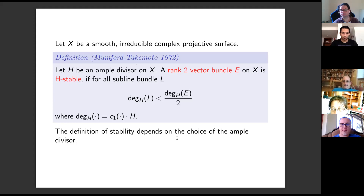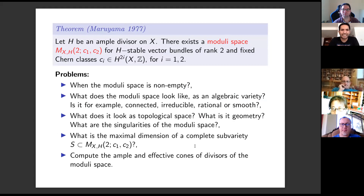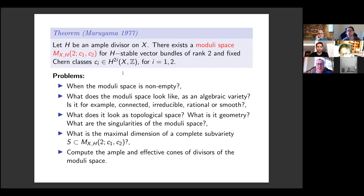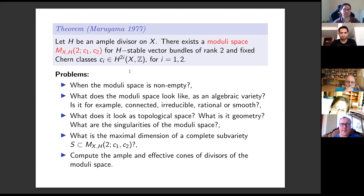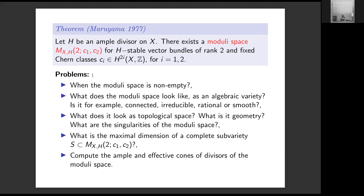In the 70s, Maruyama proved that there exists a moduli space for vector bundles with fixed Chern classes. This moduli space has been of great interest for its connections with several branches of mathematics, principally algebraic and differential geometry and physics.